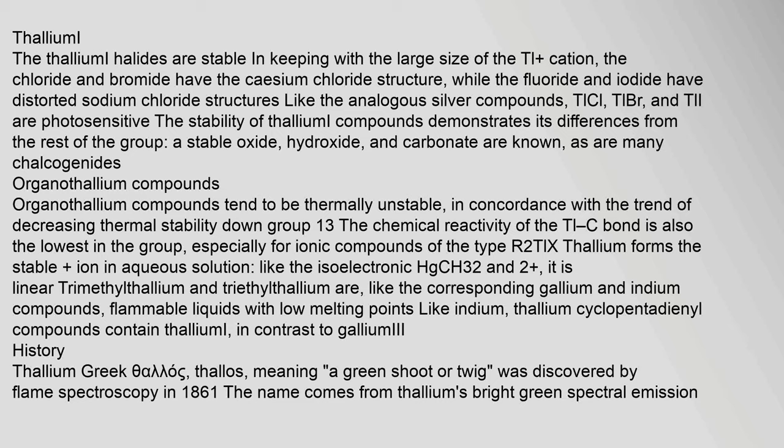The stability of thallium(I) compounds demonstrates its differences from the rest of the group — a stable oxide, hydroxide, and carbonate are known, as are many chalcogenides. Organothallium compounds tend to be thermally unstable, in concordance with the trend of decreasing thermal stability down group 13. The chemical reactivity of the Tl-C bond is the lowest in the group, especially for ionic compounds of the type R2TlX. Thallium forms a stable ion in aqueous solution, like the isoelectronic Hg(CH3)2. It is linear; trimethylthallium and triethylthallium are, like the corresponding gallium and indium compounds, flammable liquids with low melting points.